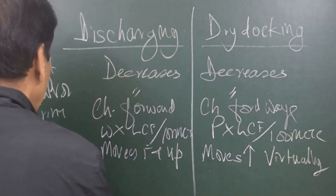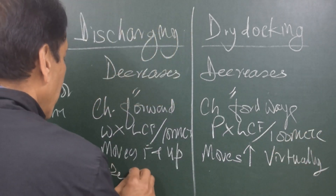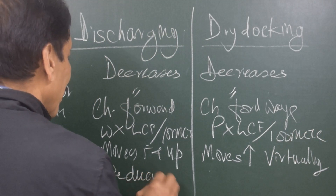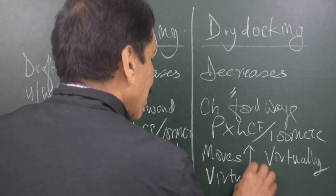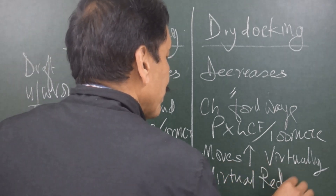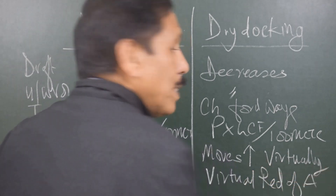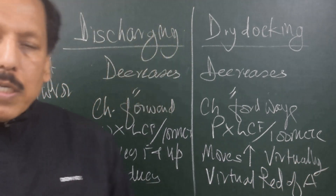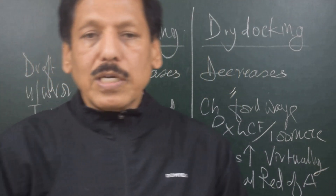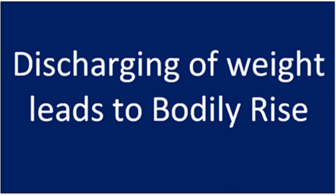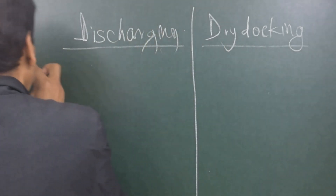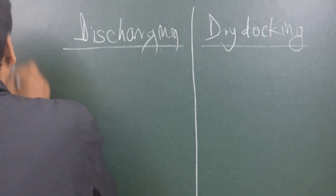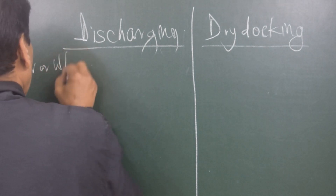In discharging, the displacement positively reduces. In dry docking, there is a virtual reduction of displacement — the virtual displacement is lower than the actual displacement initially. There are also two other very important considerations where we find differences: one is the change of draft or water level.